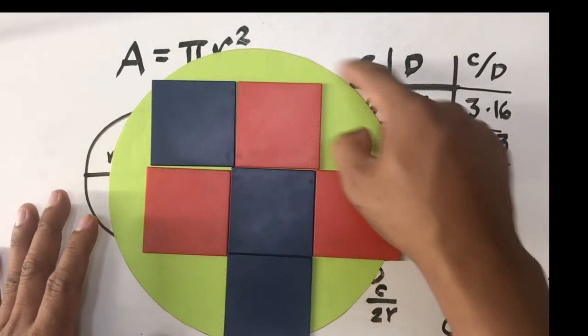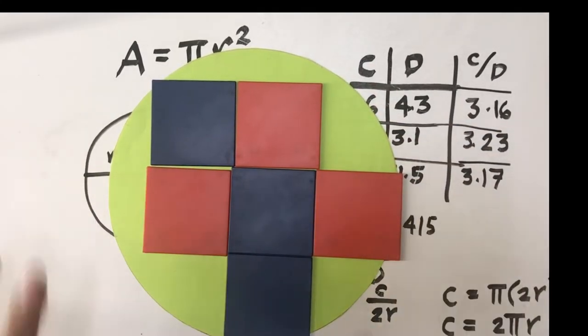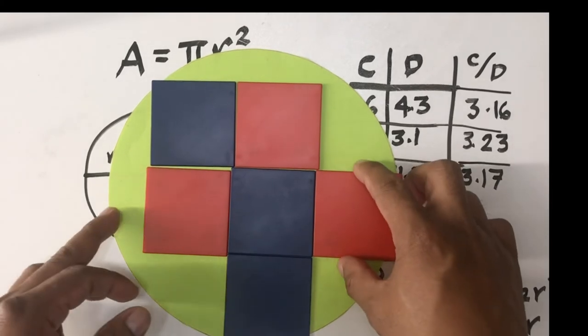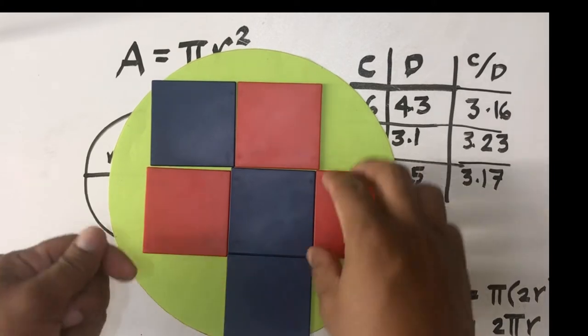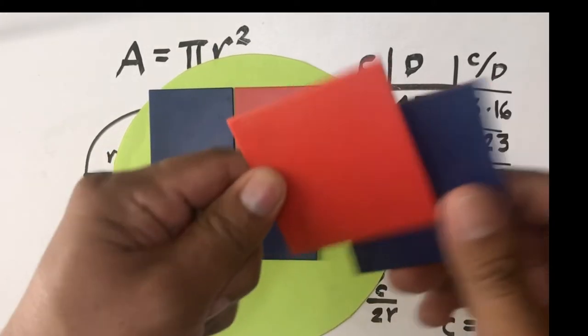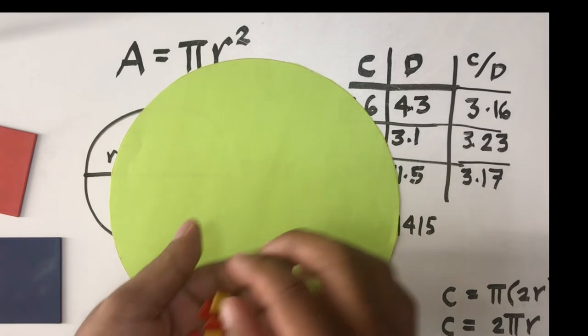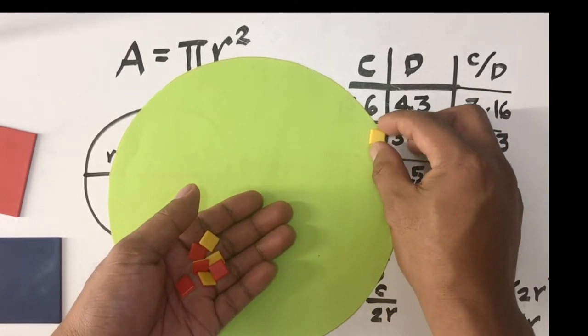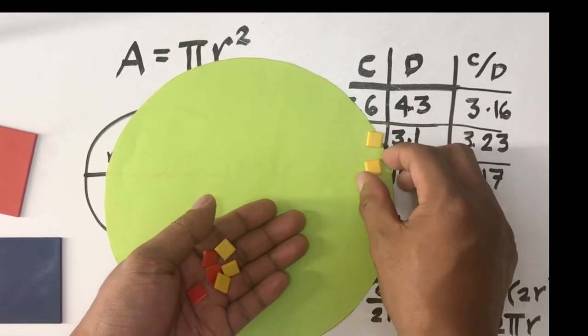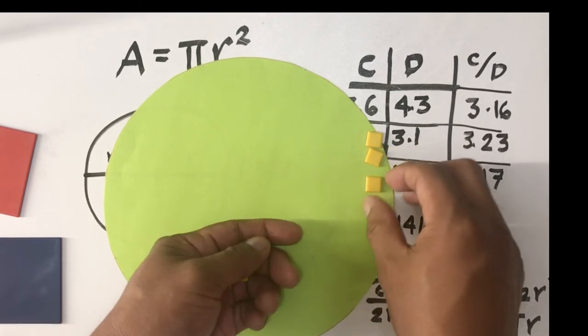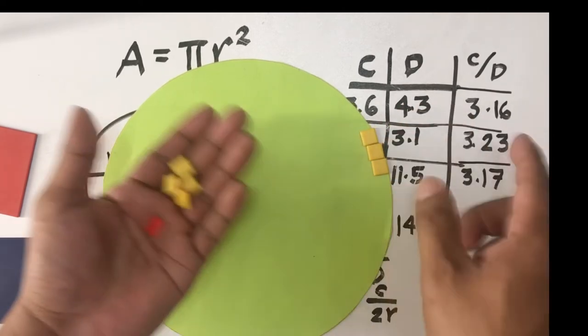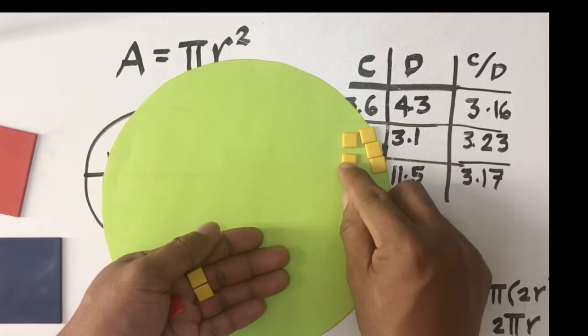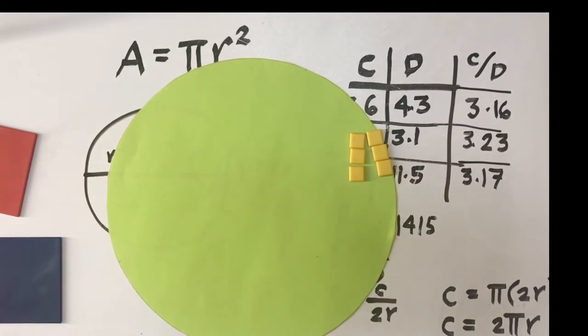You cannot exactly cover it with unit squares. Even if we attempt, instead of using these sizes of unit squares, even if we attempt to cover this part with smaller squares, still we will not be able to completely cover this circle with squares. So that is the problem.